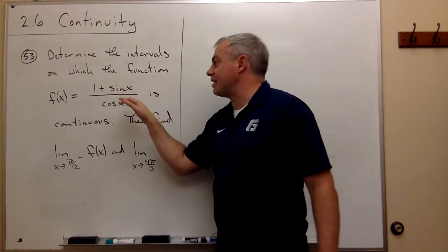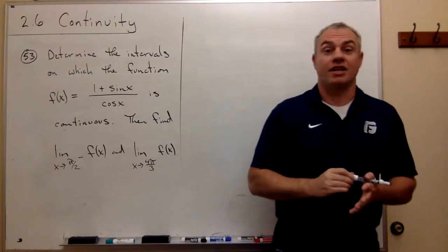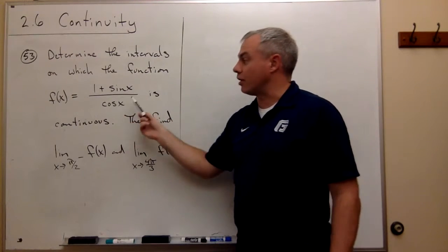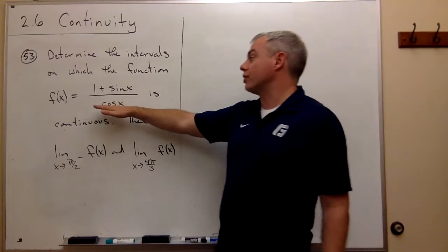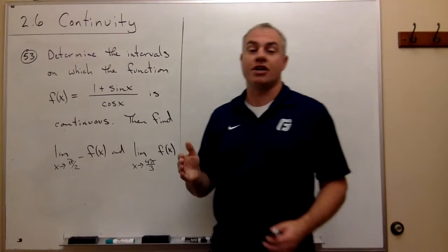Sine and cosine are both nice enough functions. They are continuous everywhere. But we could get division by 0, and division by 0 would be a problem in this case. So the first question we should ask is: where is cosine 0?